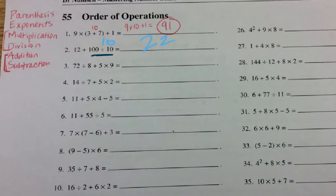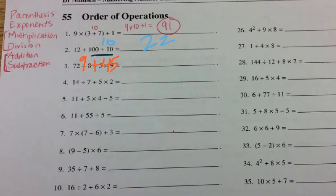For the third one, it's 72 divided by 8 plus 5 times 9. Even though division comes before multiplication, I put a bracket around multiplication and division because I'm going to do those from left to right. So I look at 72 divided by 8, which is 9, and then 5 times 9, which is 45. And I'm simply adding 9 plus 45, which is 54.